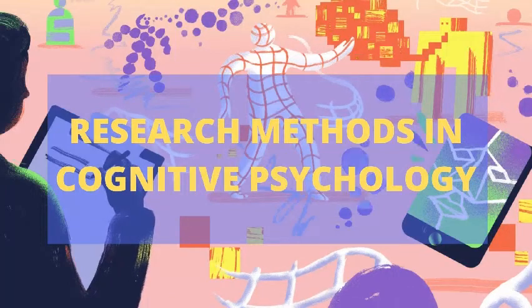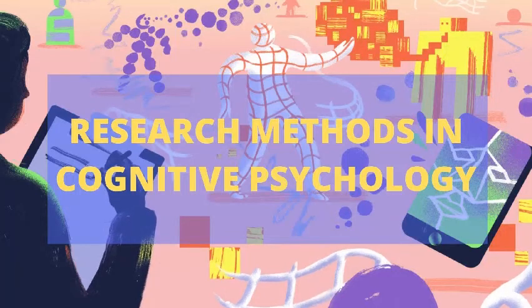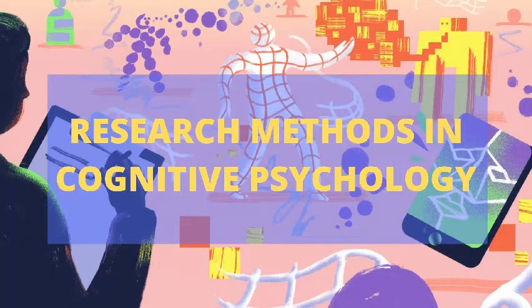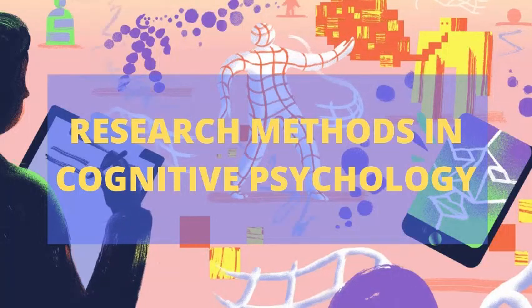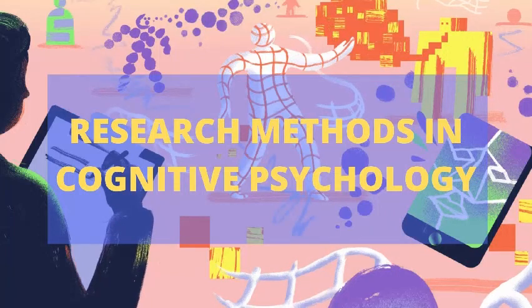Digital computers played a fundamental role in the emergence of cognitive psychology. One kind of influence is indirect, through models of human cognition based on how computers process information. Another kind is direct, through computer simulations and artificial intelligence. In computer simulations, researchers program computers to imitate a given human function or process — for example, performance on cognitive tasks such as manipulating objects within three-dimensional space, and performance of particular cognitive processes.